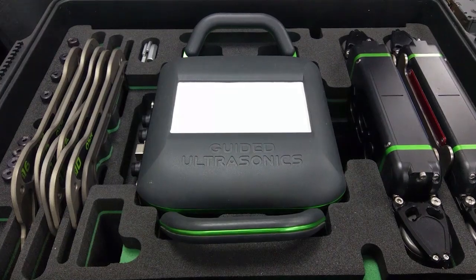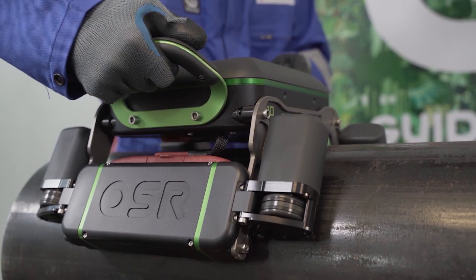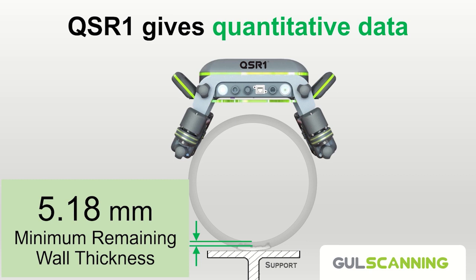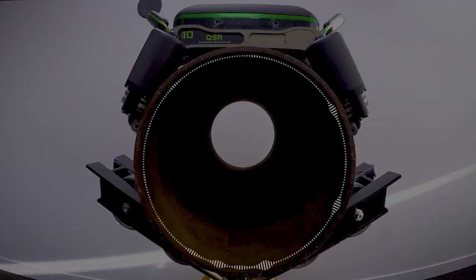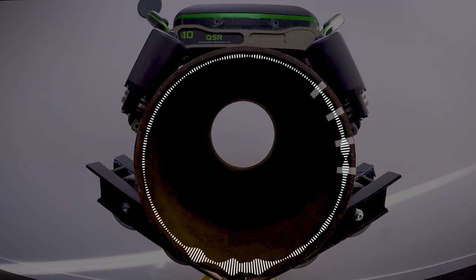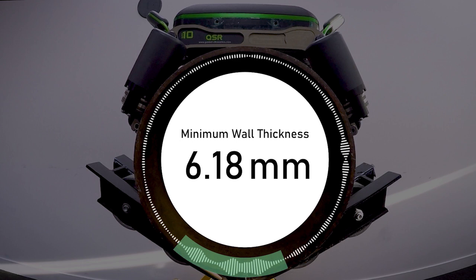GUL scanning's latest guided-wave scanner is the QS-R1. The QS-R1 quantifies the minimum remaining wall thickness of the pipe both quantitatively and accurately because it uses a frequency-based signal processing method that yields thickness measurements directly.